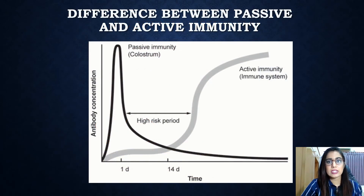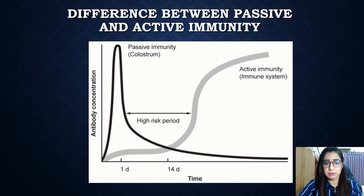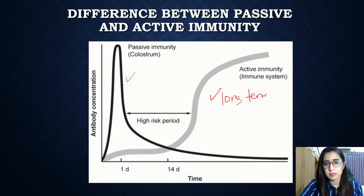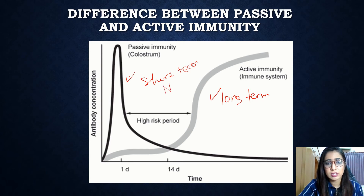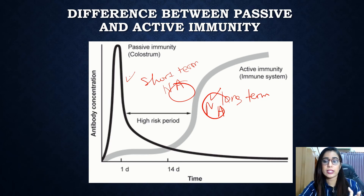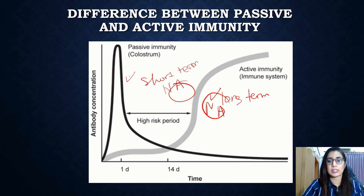The difference between passive and active immunity: active immunity is usually long-term, while passive immunity is shorter. To differentiate them, look at the natural and artificial categories for both active and passive immunity. You can find the comparison diagram in your textbook on page 208.